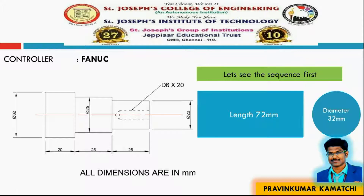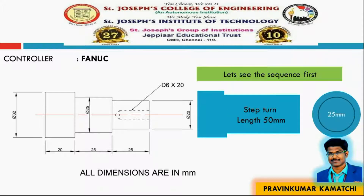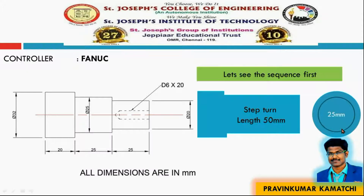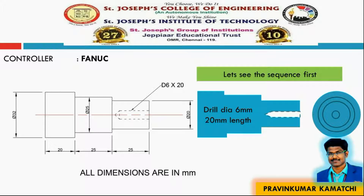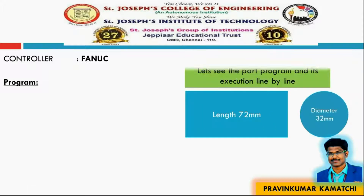First we have to do the facing operation, then we have to do the step turning operation. The first step turning has to be done to a diameter of 25mm and a length of 50mm. Then another step turning operation has to be done to a diameter of 20mm and a length of 25mm. Finally we have to change the tool and perform the drilling operation — 20mm depth with a 6mm drill bit.